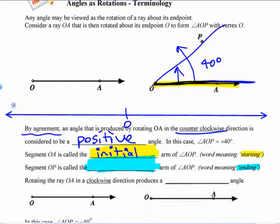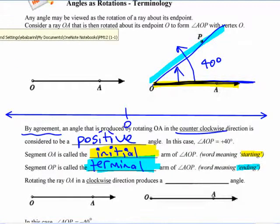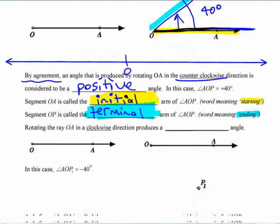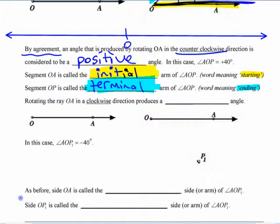The other arm's called the terminal arm because it's where it ends. You think about the angle starting on one place and rotating around to the other. The terminal of a subway line or skytrain line is the end one. If you have a terminal illness, we know what that means.